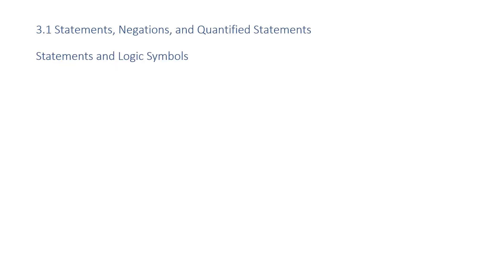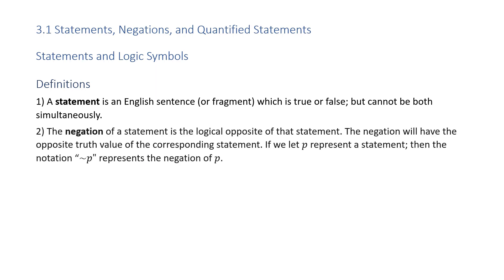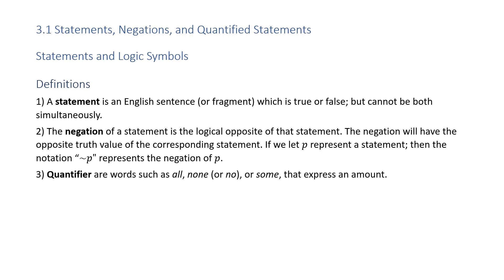Let's begin with the first section titled Statements, Negations, and Quantified Statements. We'll start with statements, logic symbols, and some definitions. First, a statement is an English sentence or fragment which is true or false but cannot be both simultaneously. Second, the negation of a statement is the logical opposite of that statement; the negation will have the opposite truth value of the corresponding statement. If we let p represent a statement, then the notation tilde p represents the negation of p — read as 'not p.' A quantifier consists of words such as all, none, or some that express an amount.